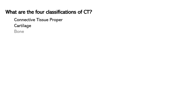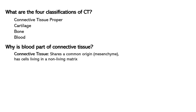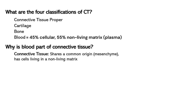So what are the four classifications of connective tissue? There's connective tissue proper, cartilage, bone, and blood. Why is blood part of connective tissue? Blood shares the same embryonic origin as the rest of connective tissue, which is mesenchyme. Also, while other tissue families are mostly cellular, connective tissue has a very high percentage of non-living material called the matrix — and the same is true for blood: it is about 45% cellular material and 55% non-living matrix.